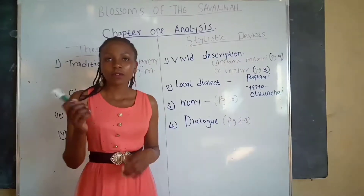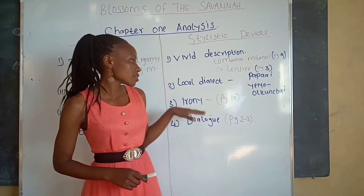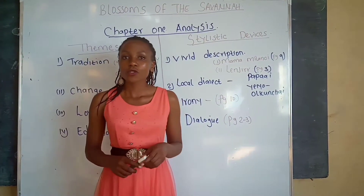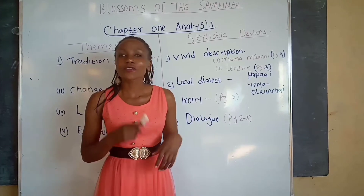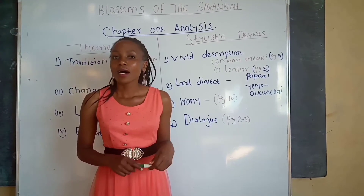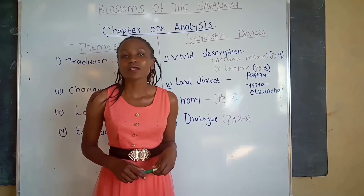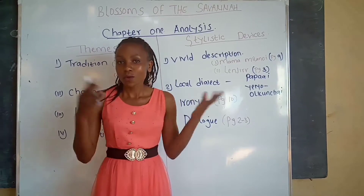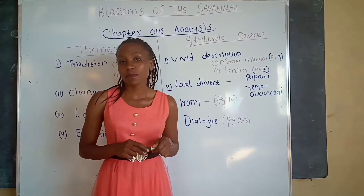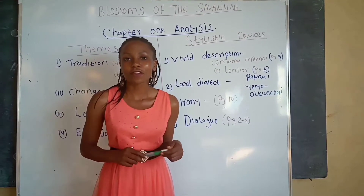The third stylistic device is irony. In simple words, irony is the opposite of what we expect. It is evident on page 10 — it is ironic for a parent to dislike or hate their own child. We are told that Ole Kaelo detested Resian the moment she was born, because he was expecting a baby son to be the heir of the family.